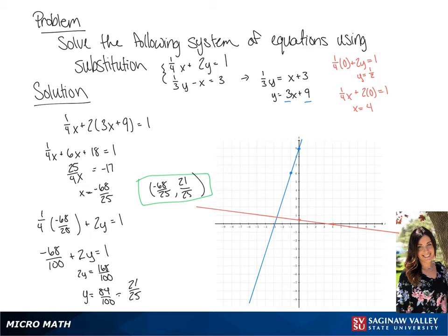And we see that these two lines meet at negative 68 over 25, which is just a little over 2, and 21 over 25, which is just a little under 1.